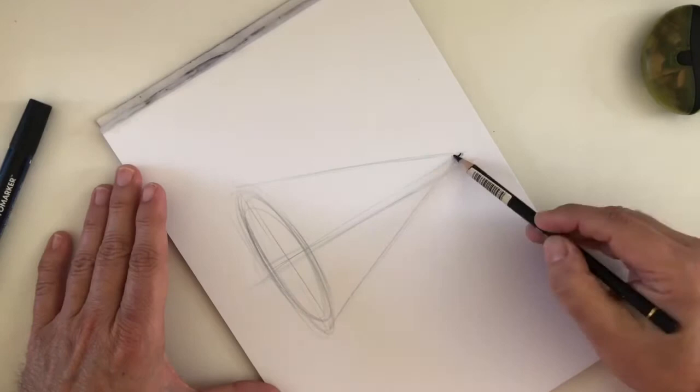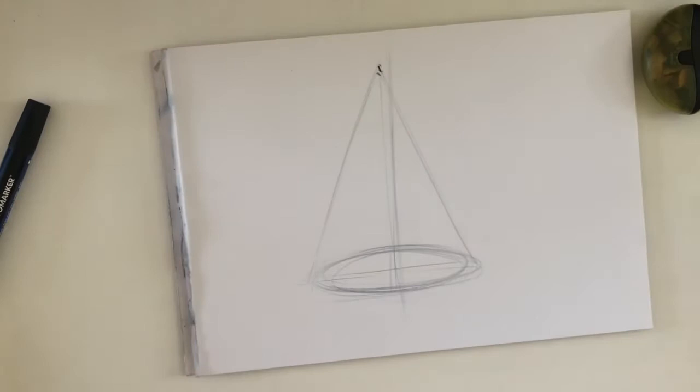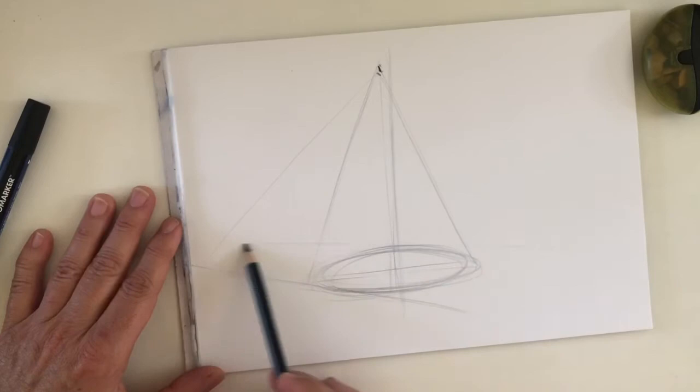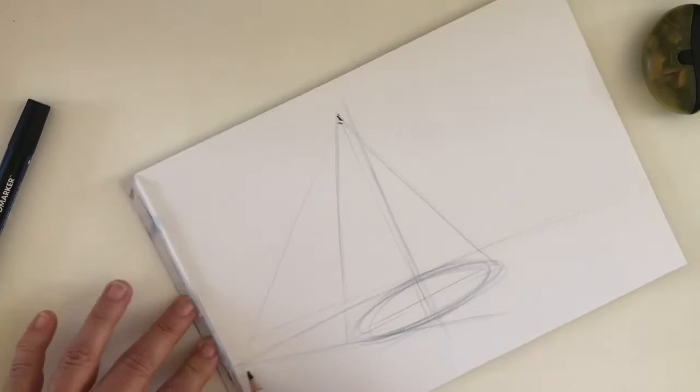So as you can see now we have our basic shape and we have to add also the cast shadow, which will be this one.